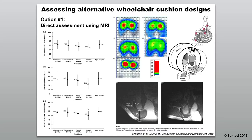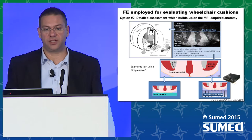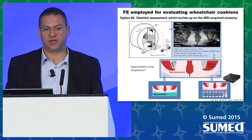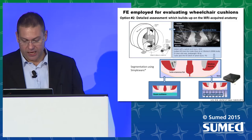Going back to assessing cushions—I've shown you before the break that small differences in internal tissue deformation levels can mean a lot, because the tissue tolerance curve is so nonlinear that even if you decrease deformations by just a little bit, you can buy a lot more safe sitting time. MRI time is expensive, so we can't use it for everything—and here computational modeling comes to our aid.